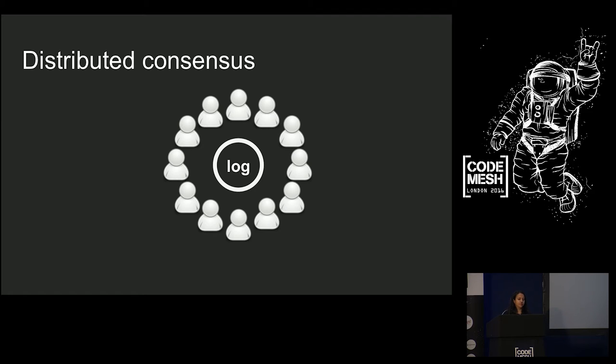Now, distributed consensus, as most of you have probably heard of it, usually assumes a crash recover fault tolerance model. So, nodes can fail, and as long as only a certain number of nodes fail, even if they crash and come back up again, then we're going to be okay. Our log is still going to be correct. We're all going to agree on the same values, and we're all going to have the same state on each of our nodes. Now, there are a lot of existing systems that do this. Paxos, Zookeeper, Raft. It's incredibly useful, and it's used across many different companies.